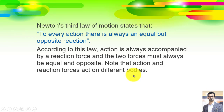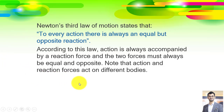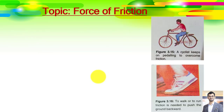A question arises: if action and reaction are two equal forces, then how does an object move? You need to understand that the action force acts on one object and the reaction force acts on the other object, so they do not cancel each other and as a result the object can move. Now, coming on to our topic — the force of friction.